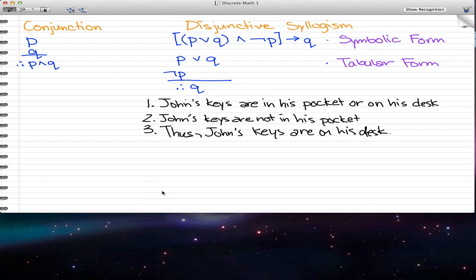Now, you can say that, with this example, that John's keys are in his pocket or on his desk. This would be our P, or on his desk. Now, or on his desk would be our Q, and I'll just switch colors here. John's keys are in his pocket or on his desk, Q.